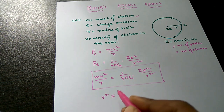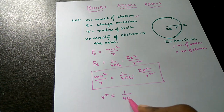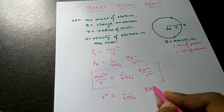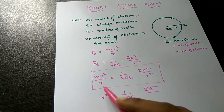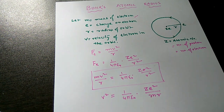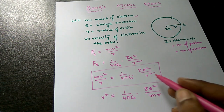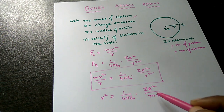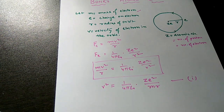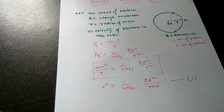Next, finding an expression for V²: V² = (1/4πε₀) × ZE² / (mR). Here, one R cancels out, leaving 1/R in the denominator with M in the denominator as well. Let us call this Equation 1.